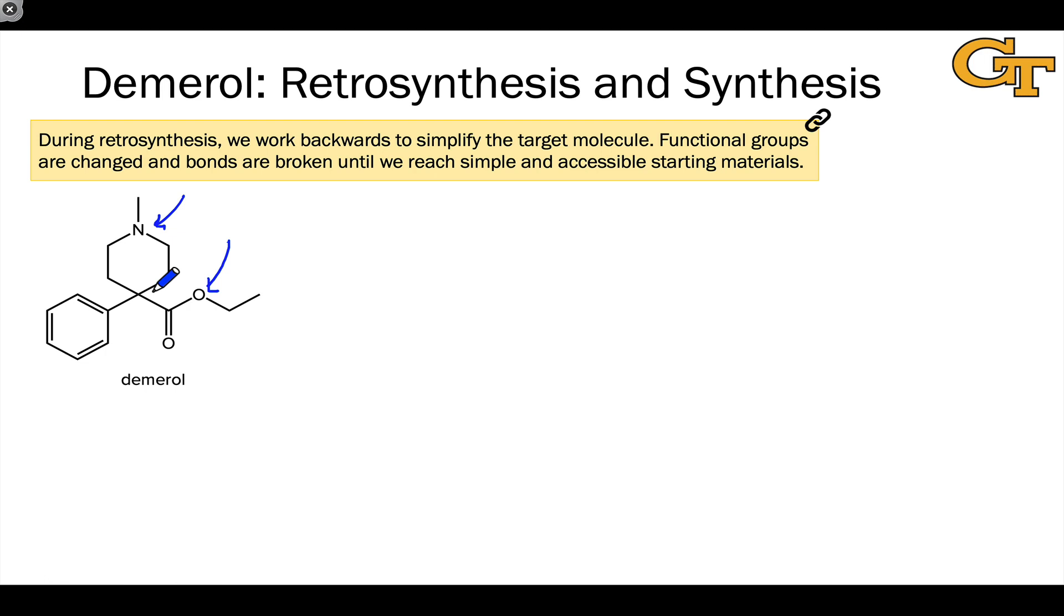And really, a key point in Demerol is the place where all of these functional groups come together—this central quaternary carbon right here. A quaternary carbon is actually a point of structural complexity in organic molecules because it can be difficult to establish a quaternary carbon, especially when that's stereogenic. It's not in the case of Demerol, which makes our lives much easier. But this should really be a focal point for our attention in thinking about how to simplify Demerol to simpler starting materials, because converting that quaternary carbon into a less substituted carbon is absolutely a simplifying transform.